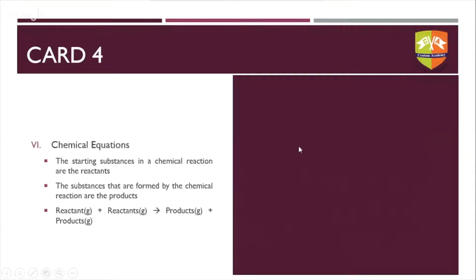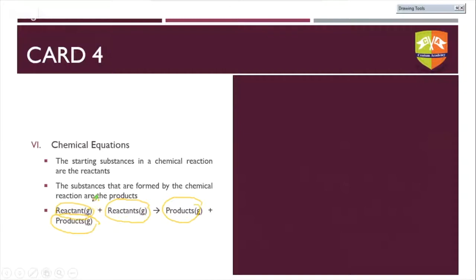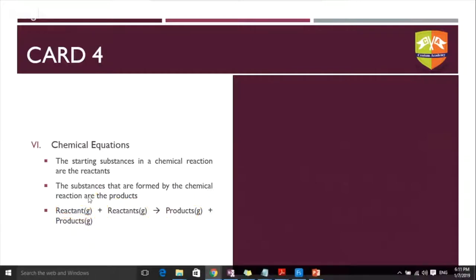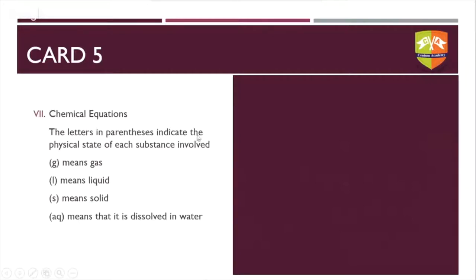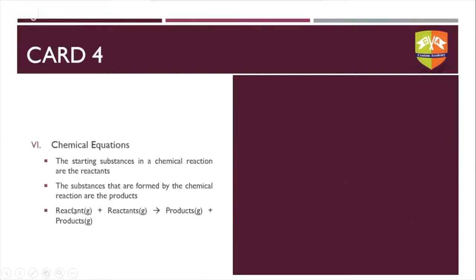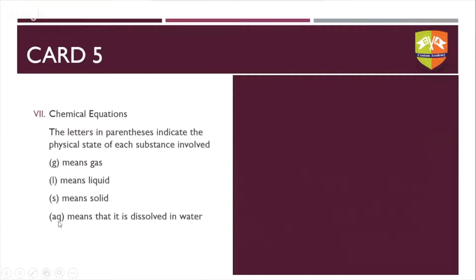When writing chemical equations, the starting substances are reactants and the end products are products. Either a single reactant or multiple reactants are separated by an arrow to give a single product or multiple products. The reaction can give any number of products or use any number of reactants. Symbols like (g), (l), (s), and (aq) represent the physical state of substances.